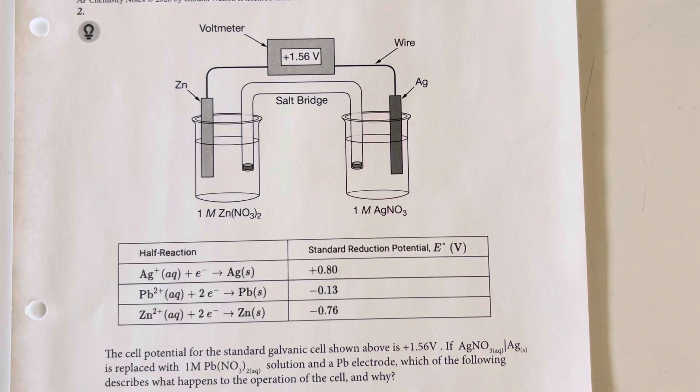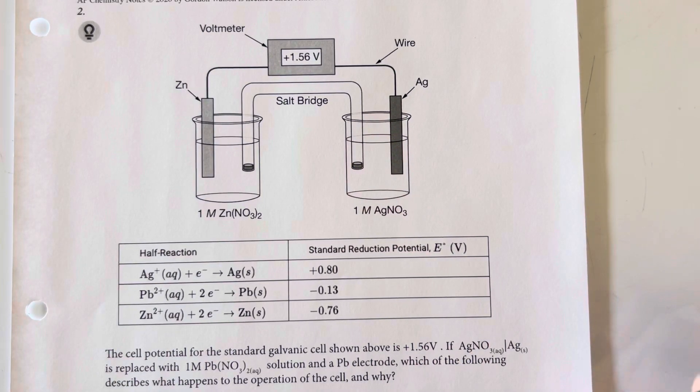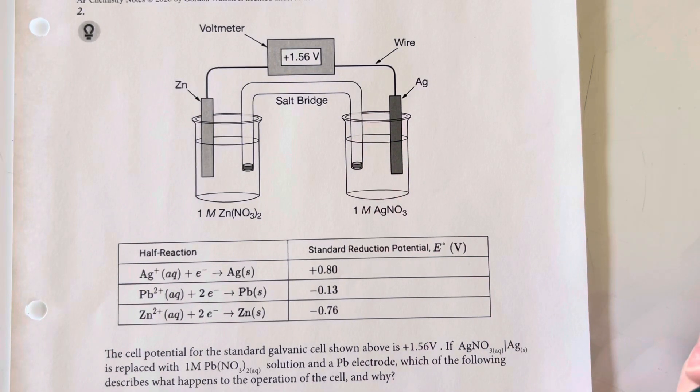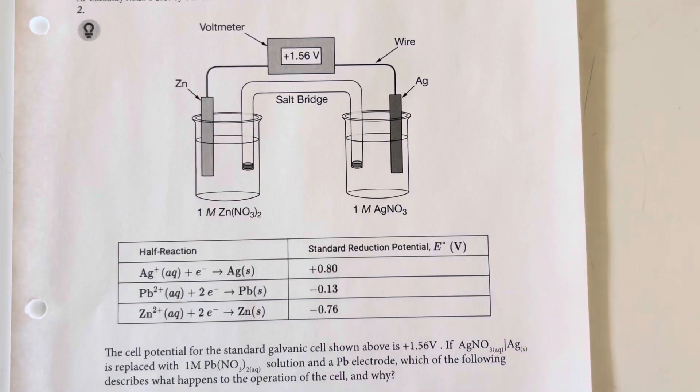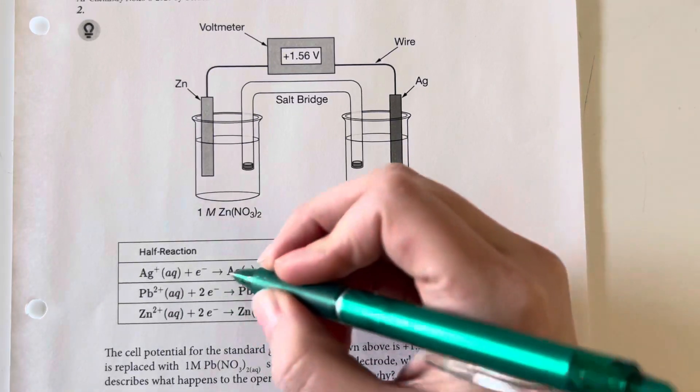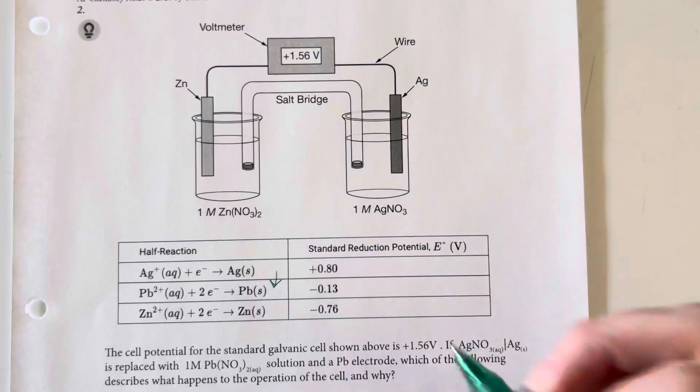The cell potential for a standard galvanic cell above is 1.56 volts. If the silver nitrate and silver electrode are replaced with one molar lead nitrate solution and a lead electrode, which of the following describes what will happen to the operation of the cell? Now we are switching from silver to lead.